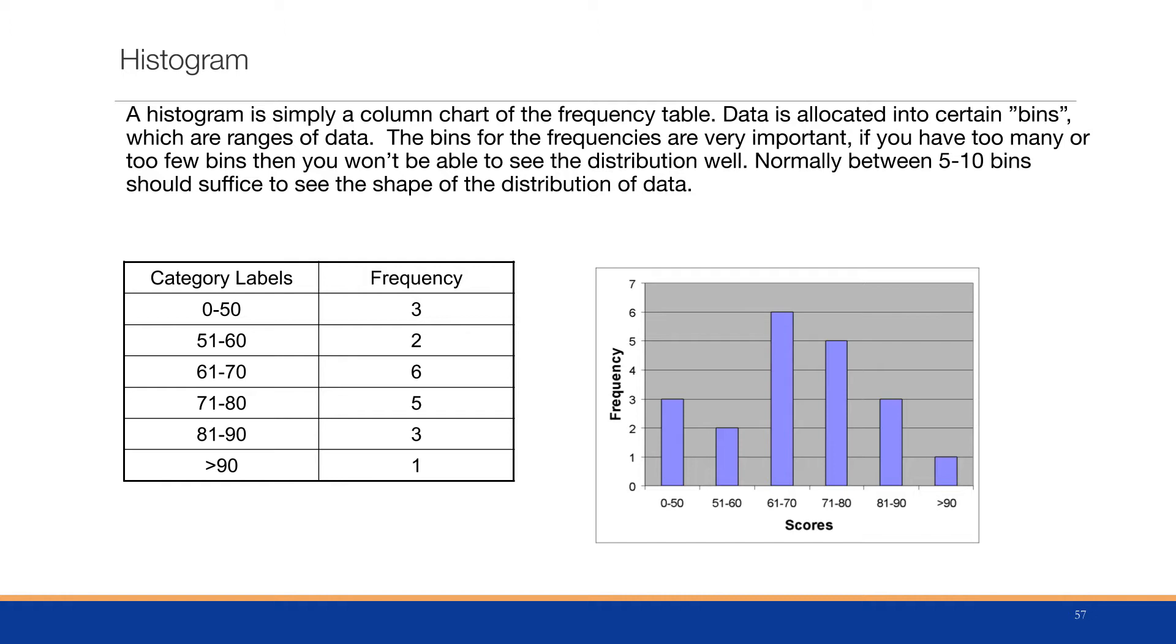Here, we have an example where we have category labels 0 to 50, 51 to 60, and so forth, and we have the frequency counts. We can produce a chart from it and see the distribution. We see the semblance of a normal distribution with maybe a problem here at 51 to 60.